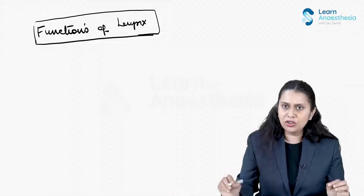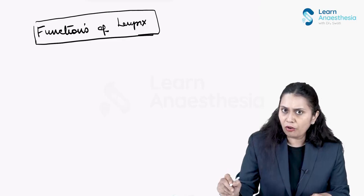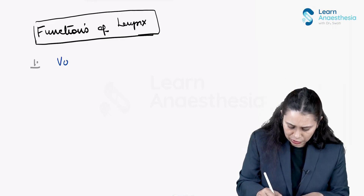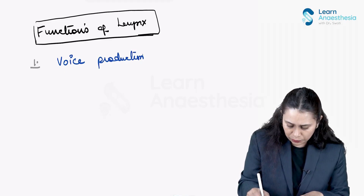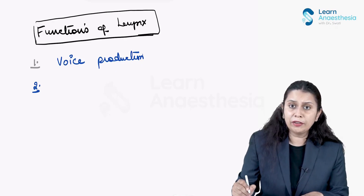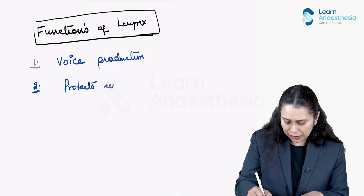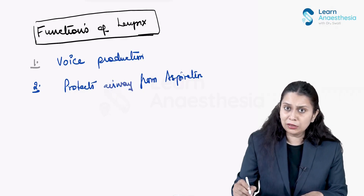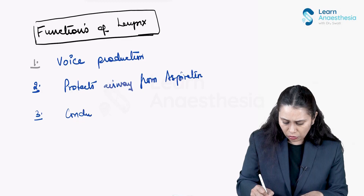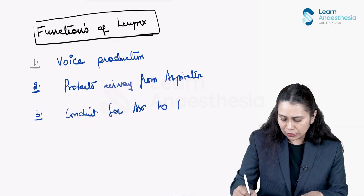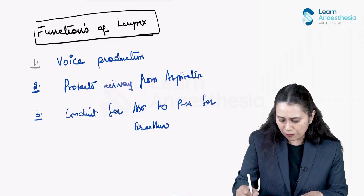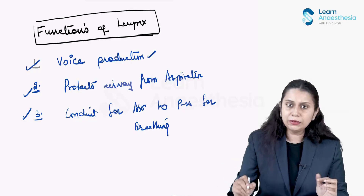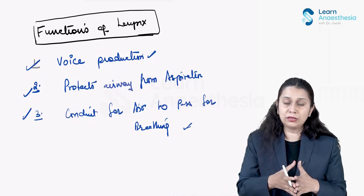Let us see the functions of the larynx. Number one: it is called the voice box, so it is responsible for voice production. Second: it protects the lower airway from aspiration. Third: it is the conduit for air to pass to the lower respiratory tract, for breathing to happen. These are the three important functions of the larynx. If the vocal cord is closed, voice production will happen; if it is open, air will pass through it.